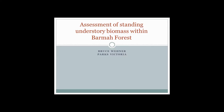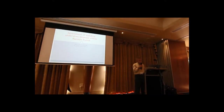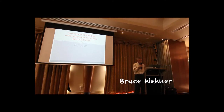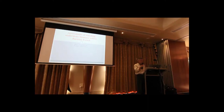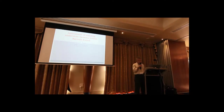In April 2007, at the end of or in the middle of the drought, conditions were very poor in the forest and the decision was made by the agencies — Parks Victoria and DSE at the time — that cattle were to be removed from the forest. We realised then that we didn't have any real mechanism or benchmark for determining when and if cattle should be reintroduced to the forest.